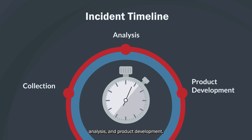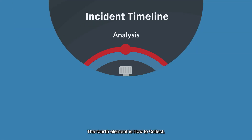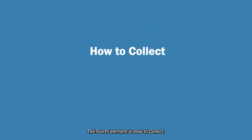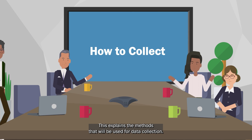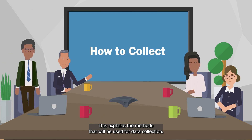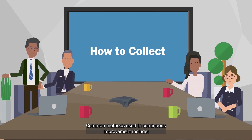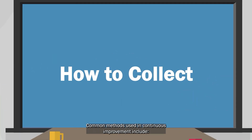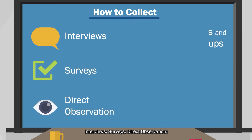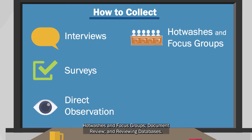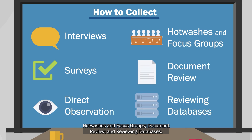The fourth element is how to collect. This explains the methods that will be used for data collection. Common methods used in continuous improvement include interviews, surveys, direct observation, hot washes and focus groups, document review, and reviewing databases.